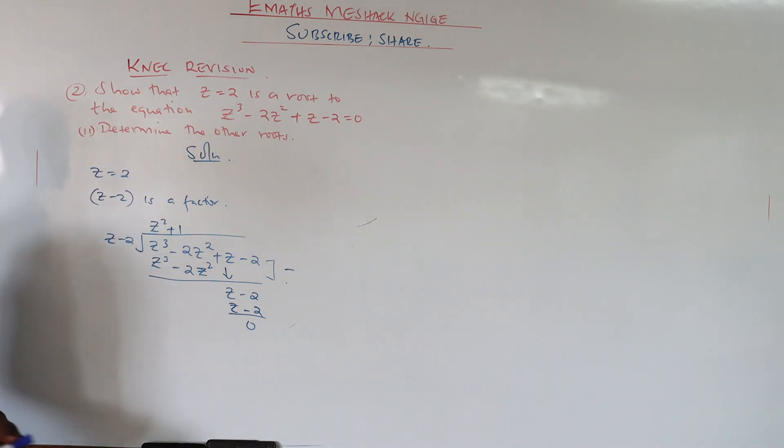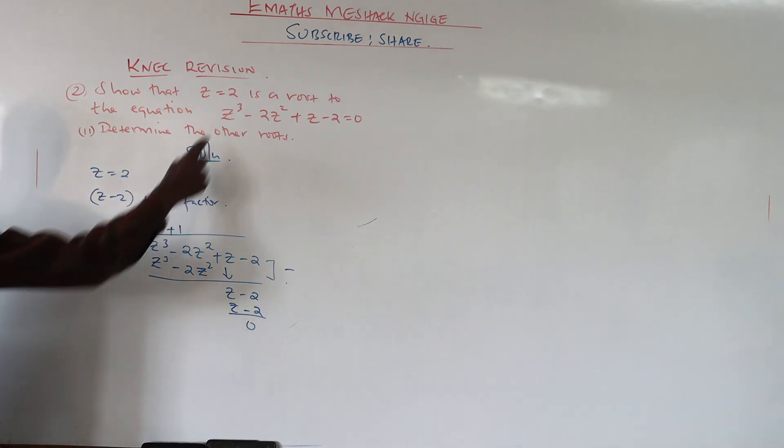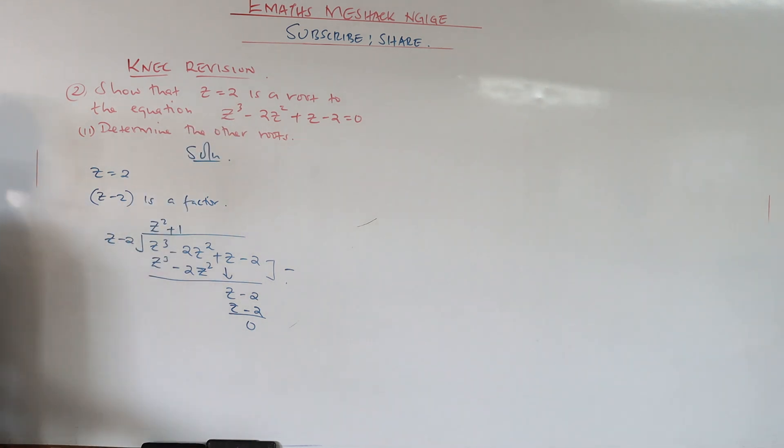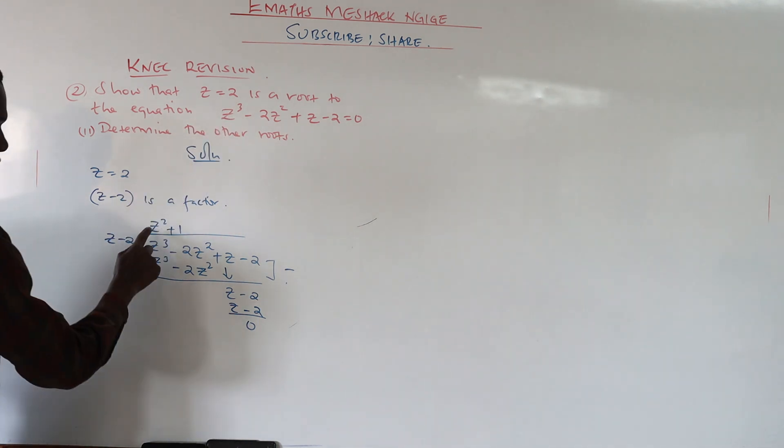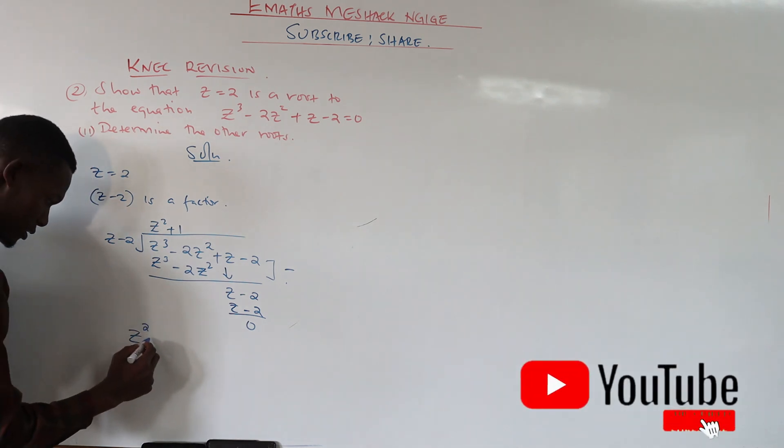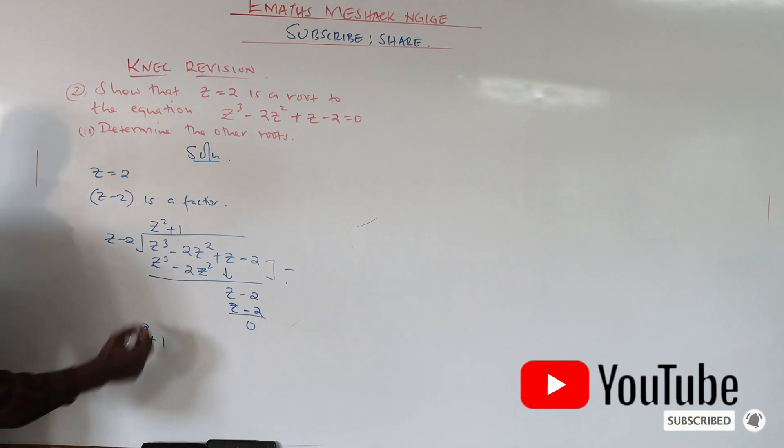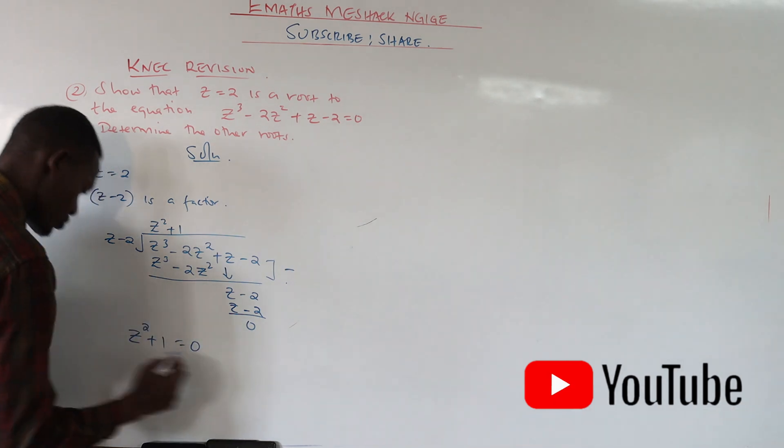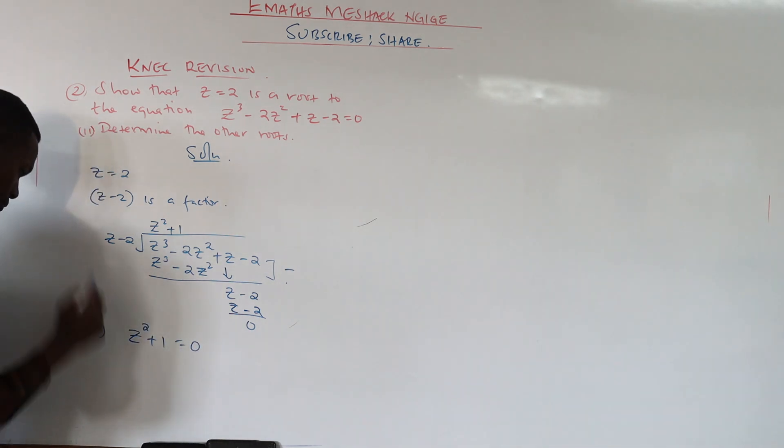Now to get the other two solutions, because remember it is a cubic function and we only had one root, so we needed two more. We take the term z squared plus one and equate it to zero.